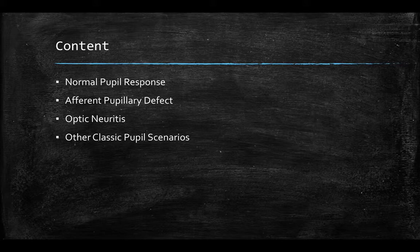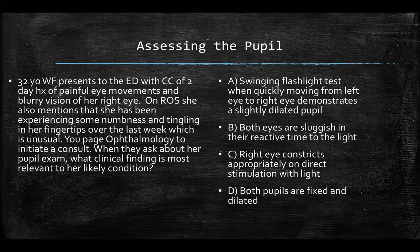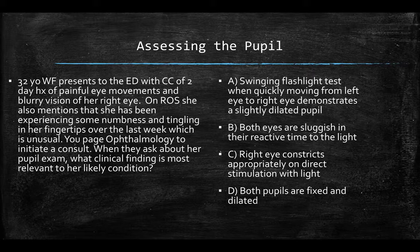optic neuritis, and other classic pupil scenarios that we think you should be aware of. Here's a question: a 32-year-old white female presents to the emergency department with a chief complaint of a two-day history of painful eye movements and blurry vision of her right eye. On review of systems she also mentions experiencing some numbness and tingling in her fingertips over the last week, which is unusual for her. You page the ophthalmology service to initiate a consult; when they ask about her pupil exam, what clinical finding is most relevant to her likely condition?